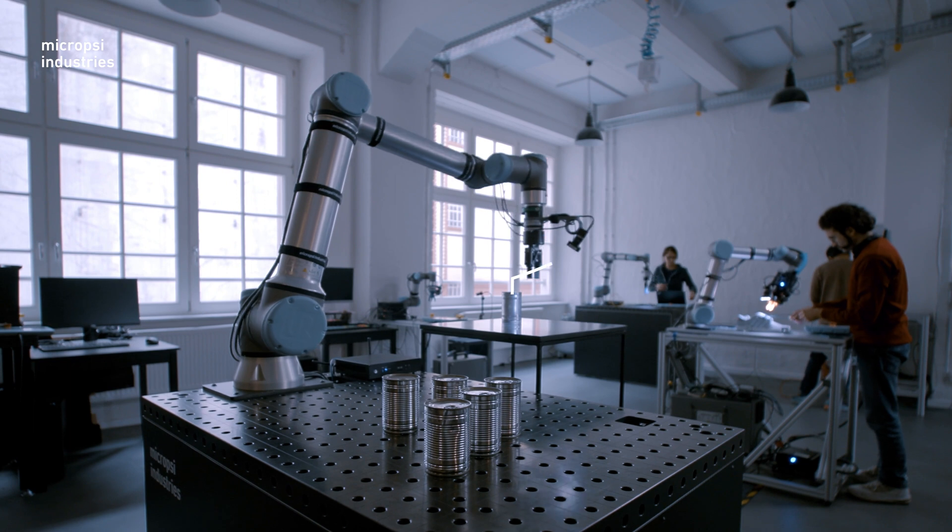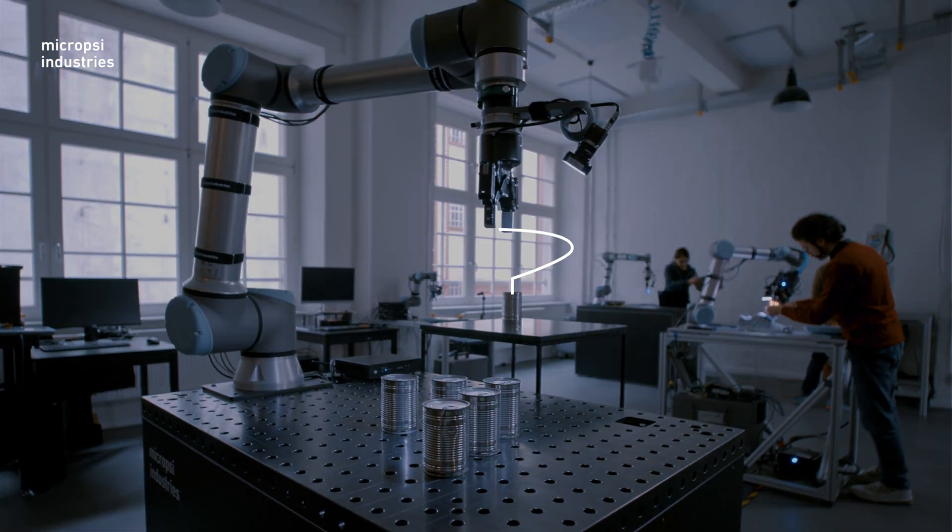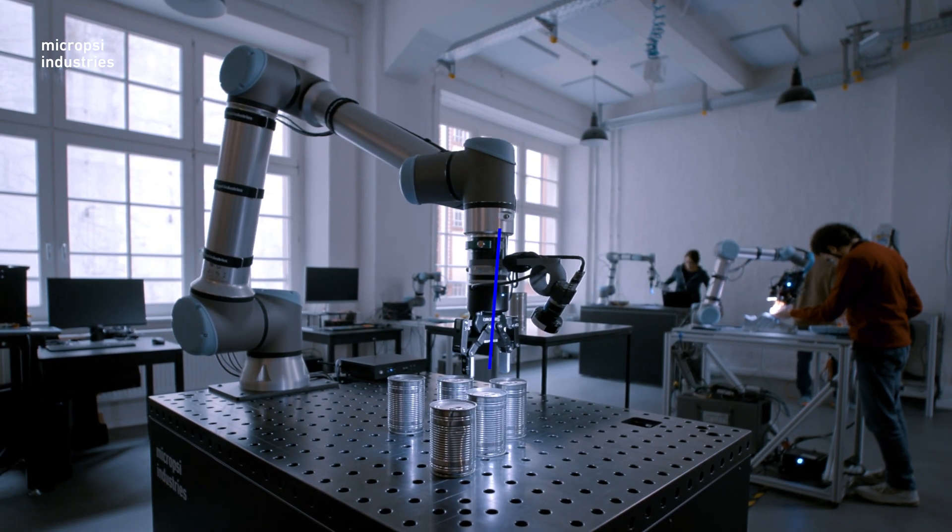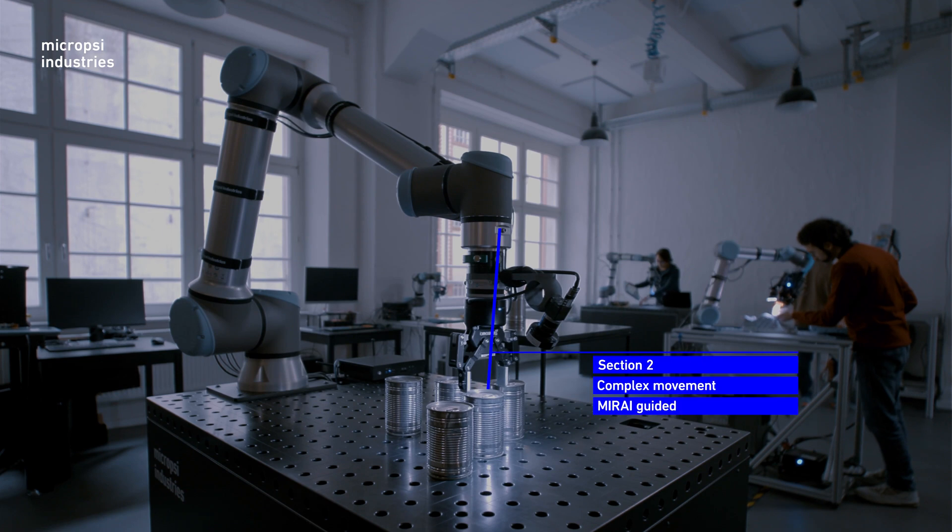The robot's native controller will steer sections of the task with predetermined movements. The Mirai controller will steer other sections. We use Mirai for the complex sections with variants, when things in the workspace aren't predictable.